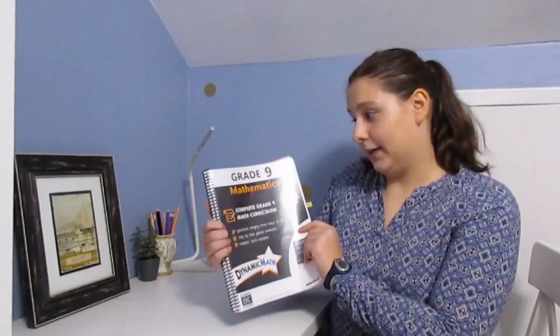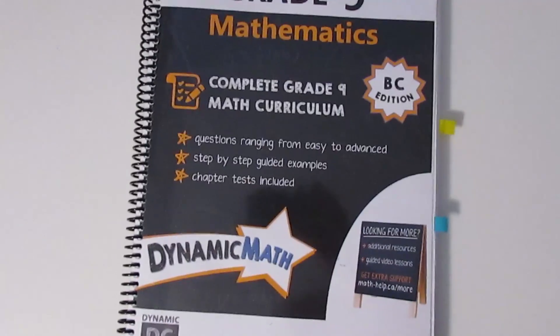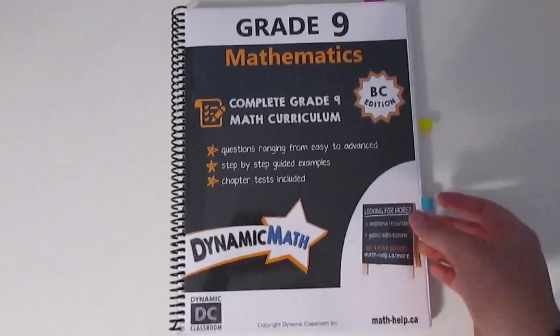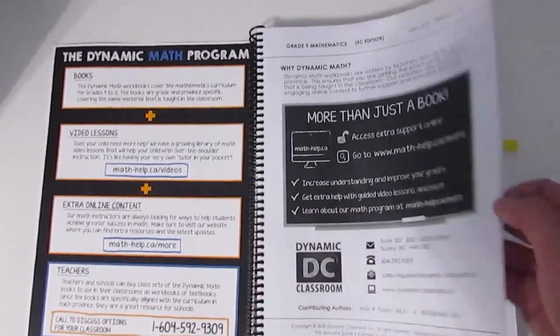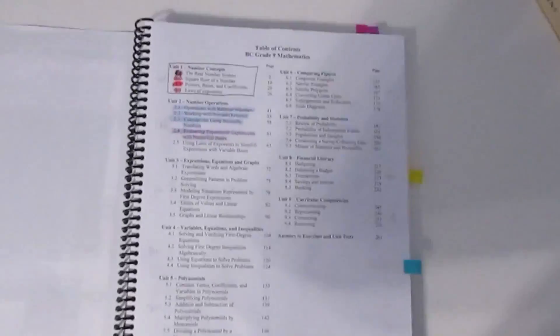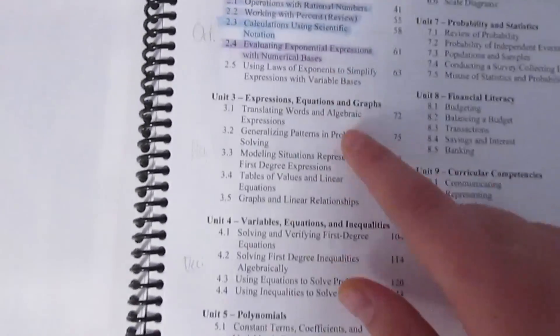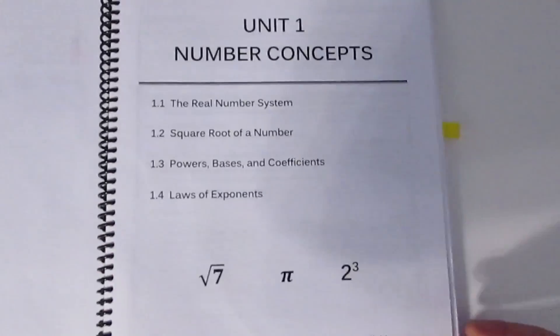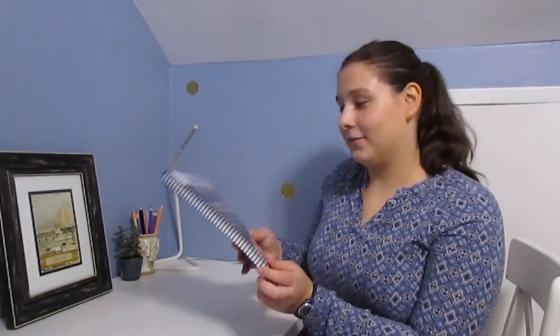For my math I am doing Grade 9 Mathematics by Dynamic Math. It's a great math program. In here are the units — there are nine units, labeled September through May. On the back there's some extra content and an answer key. I love these books because they go all the way out to Grade 12.